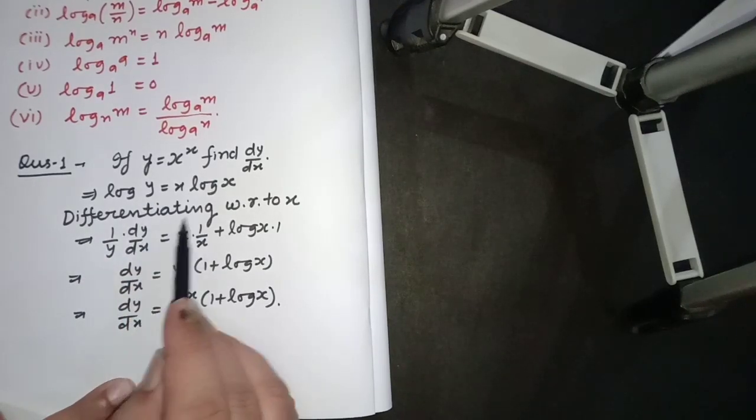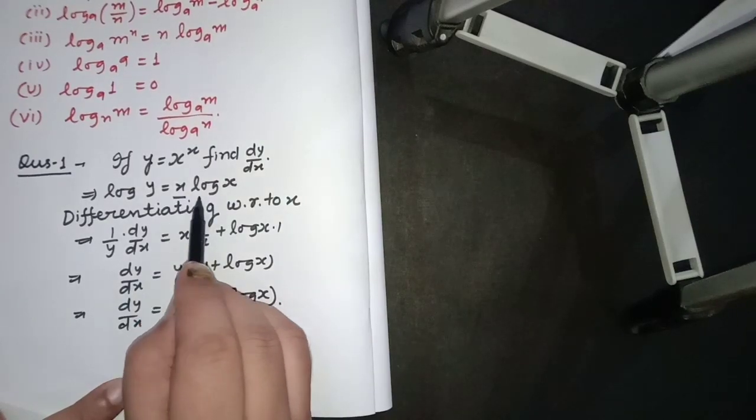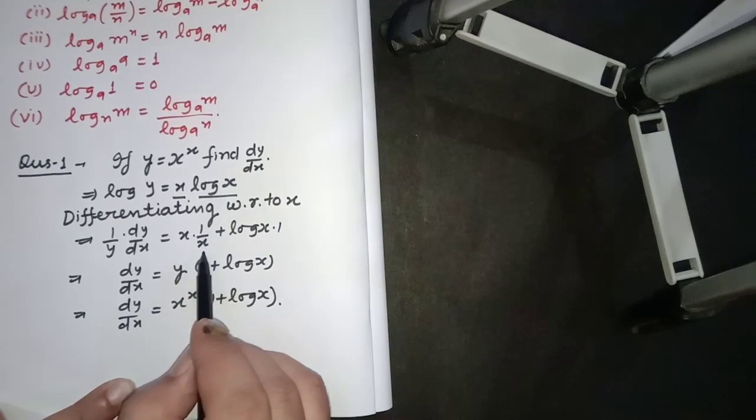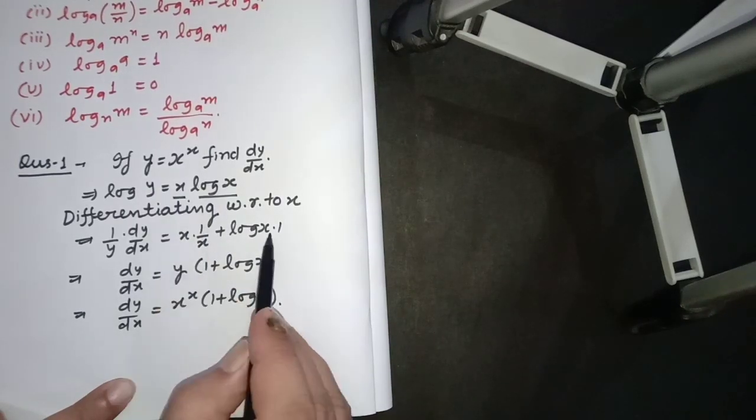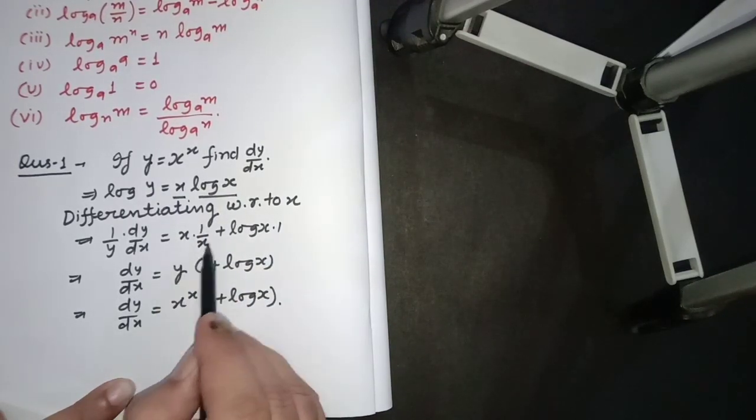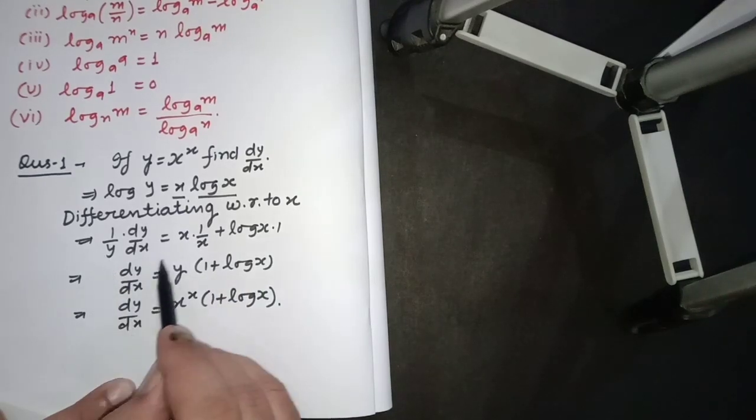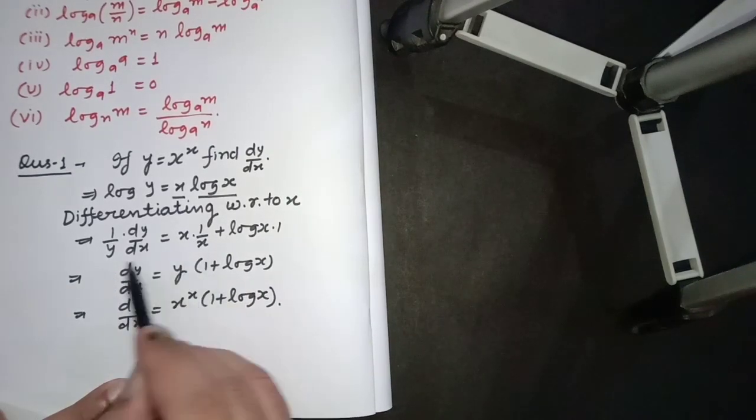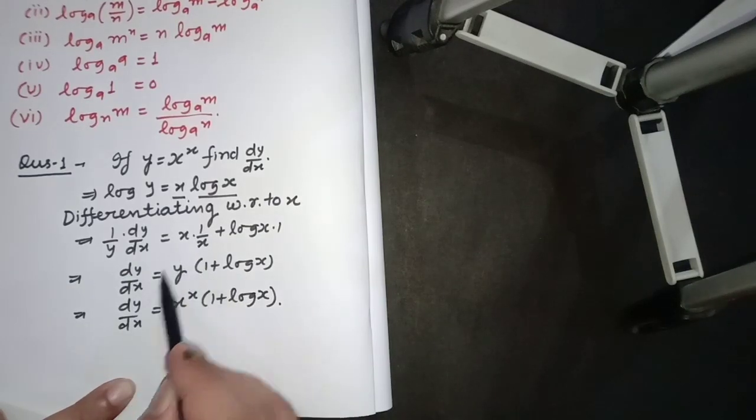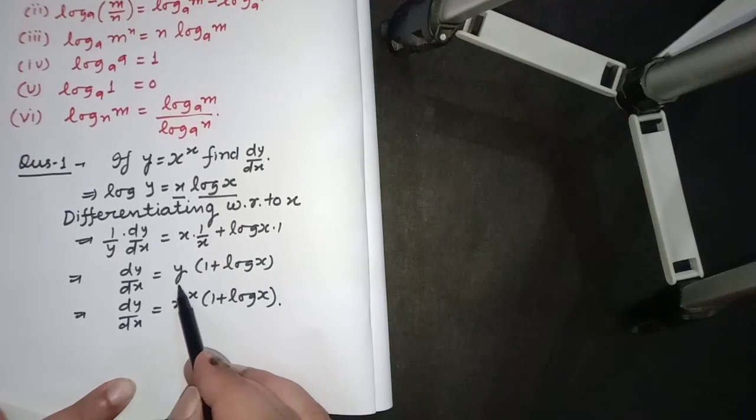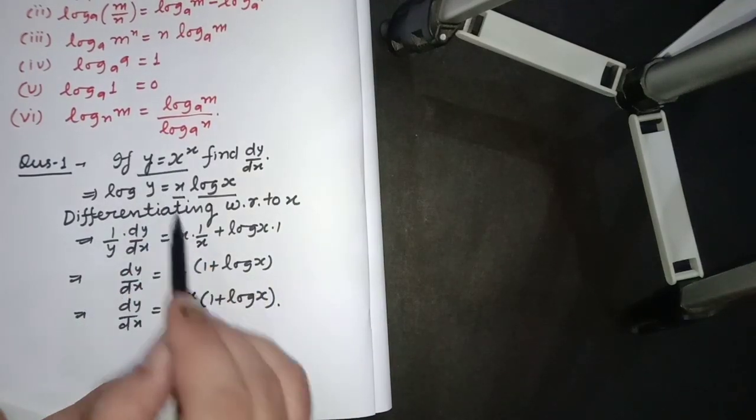Here we have two functions, so we have to use the product rule: first function times differentiation of second, plus second function times differentiation of first. This will be cancelled out to 1 plus log x. And y will be cross multiplied on RHS, so dy by dx will come out y times (1 + log x). And y will be replaced as original function, so that will be x^x times (1 + log x). So it is the solution.